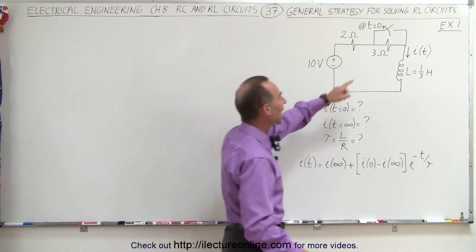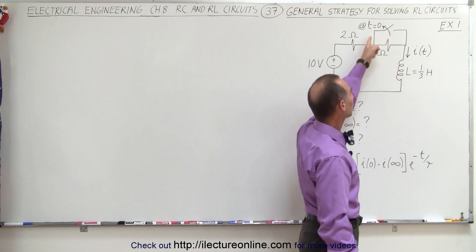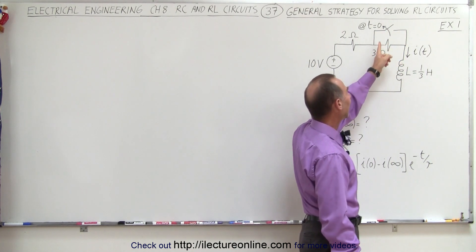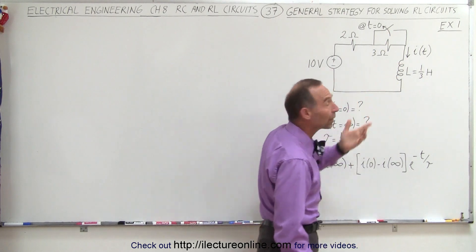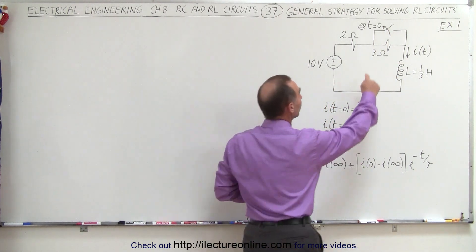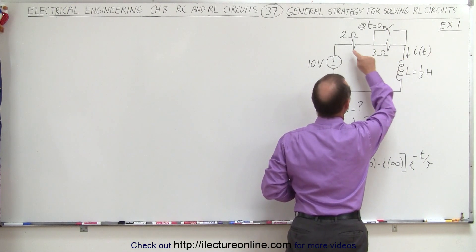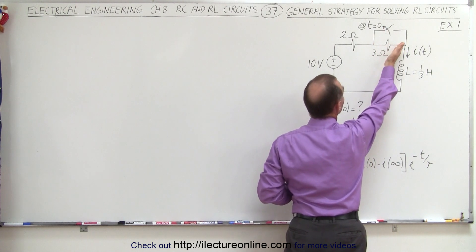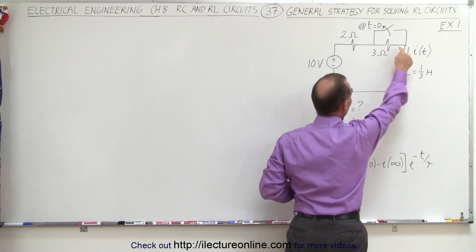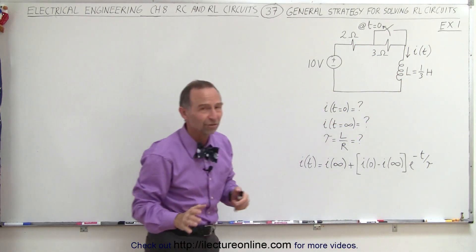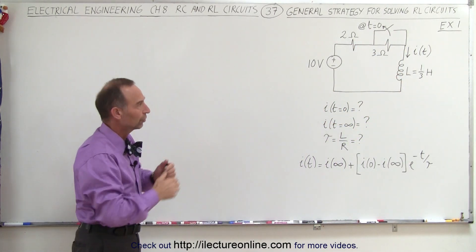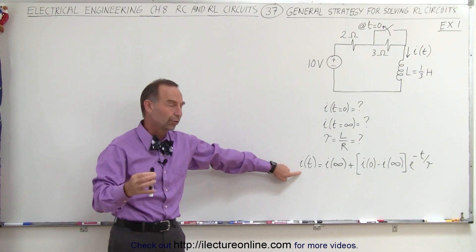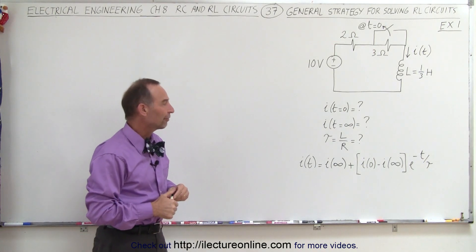Here we can see that we have a current path without a resistor going around the 3 ohm resistor, and it is closed at time equals zero, which means that all the current will bypass the 3 ohm resistor and go through the 2 ohm resistor and the inductor. At time equals zero, the switch opens up, and now the current is forced to go through the 3 ohm resistor, therefore changing the current in the circuit.